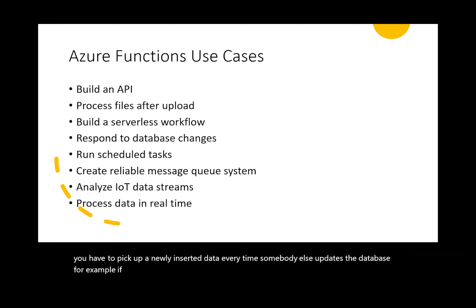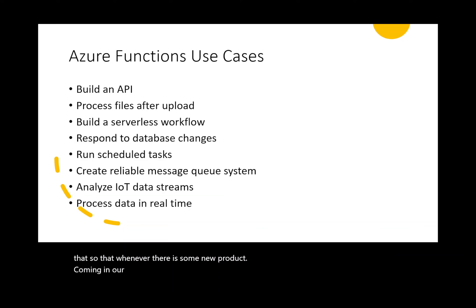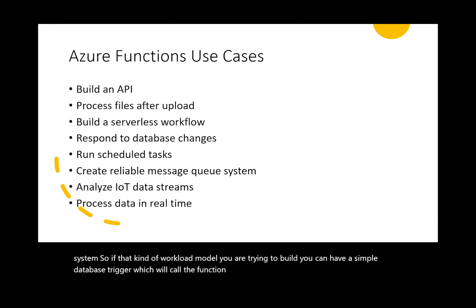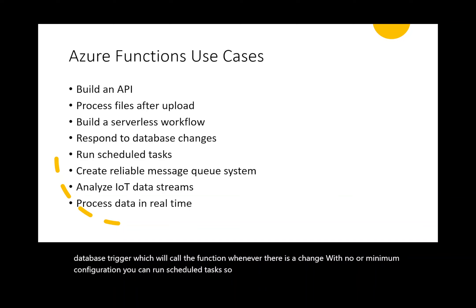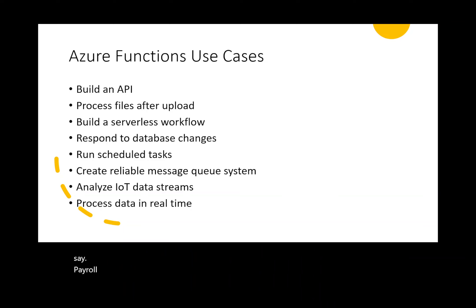Imagine you need to pick up newly inserted data every time somebody updates the database. For example, if it's a product catalog database and your vendors are updating it, you monitor it so that whenever a new product comes in or an old product is removed you update your inventory system. You can have a simple database trigger that calls the function on any change. You can also run scheduled tasks using cron jobs — for example payroll processing on the 30th of every month — and it supports all cron notation formatting.